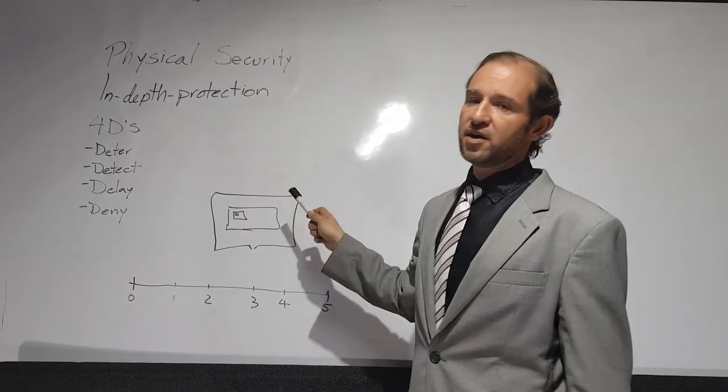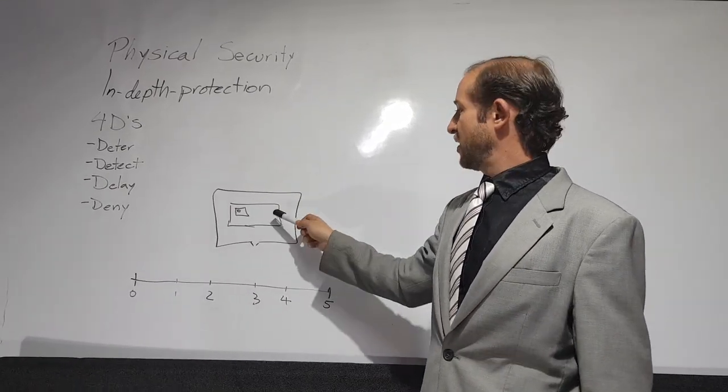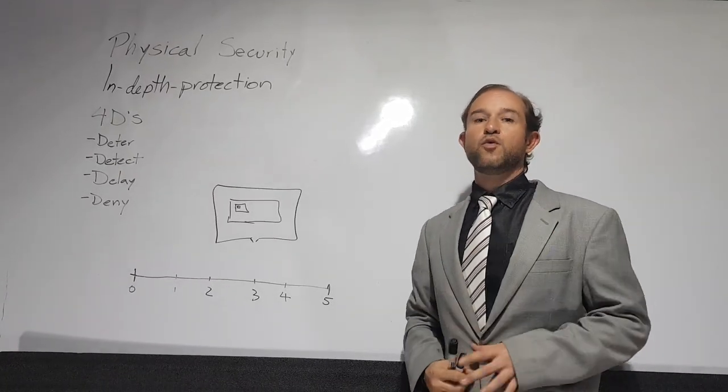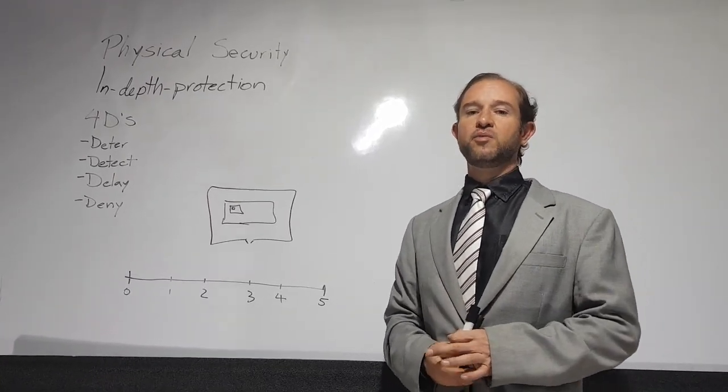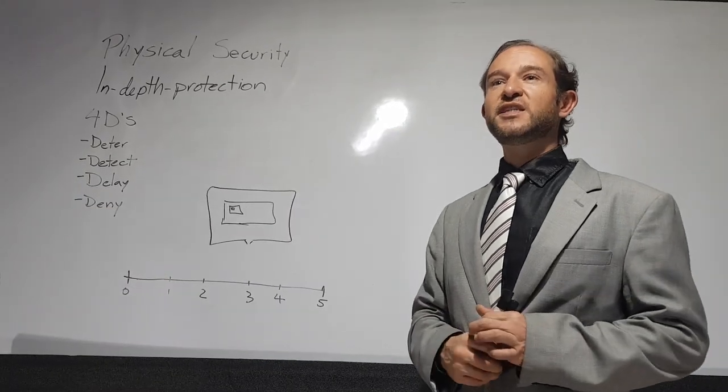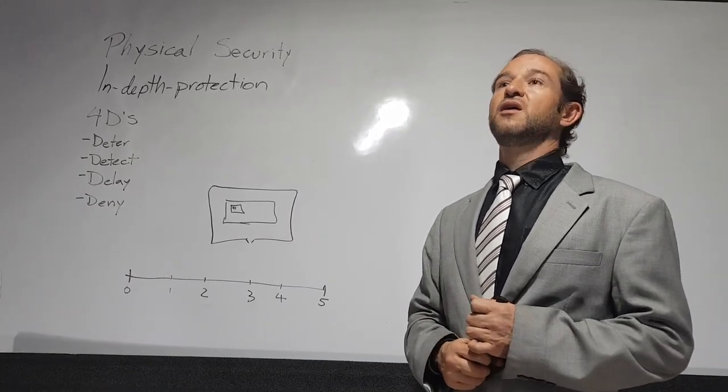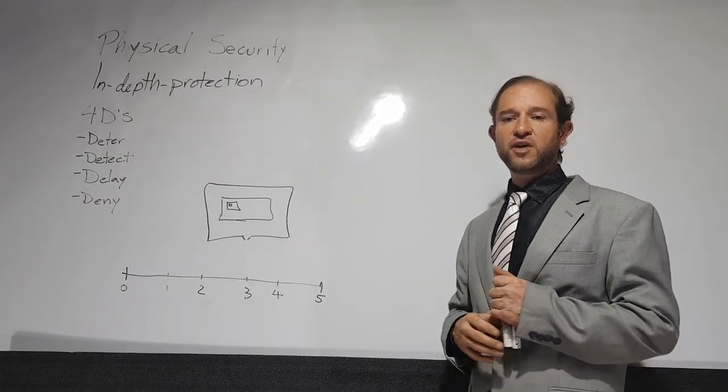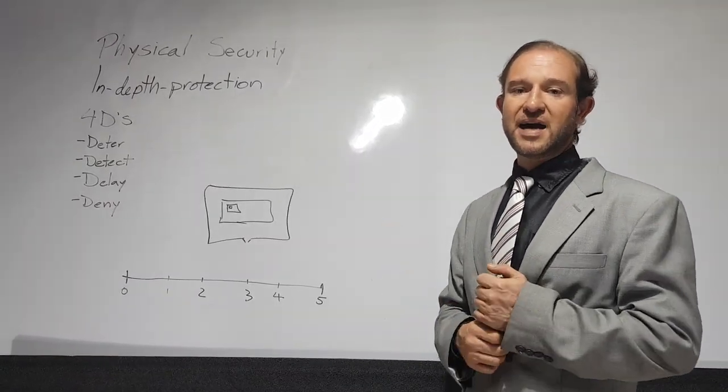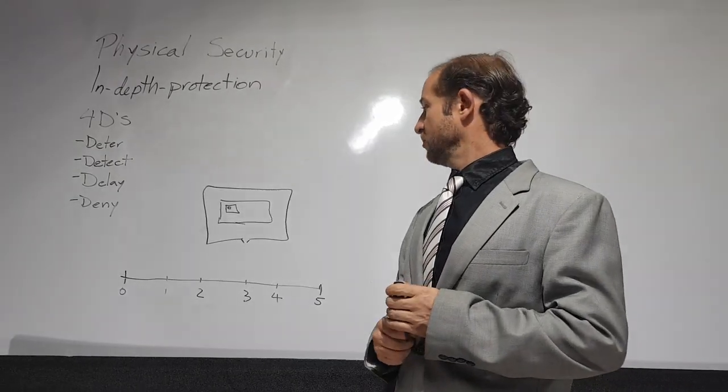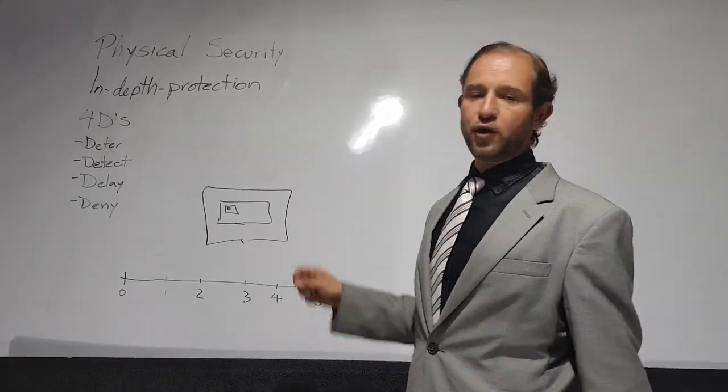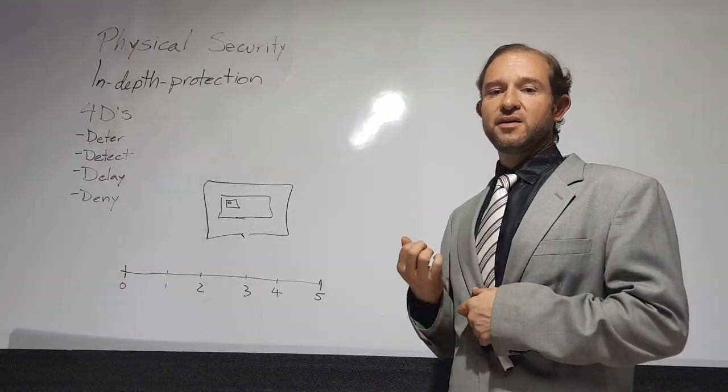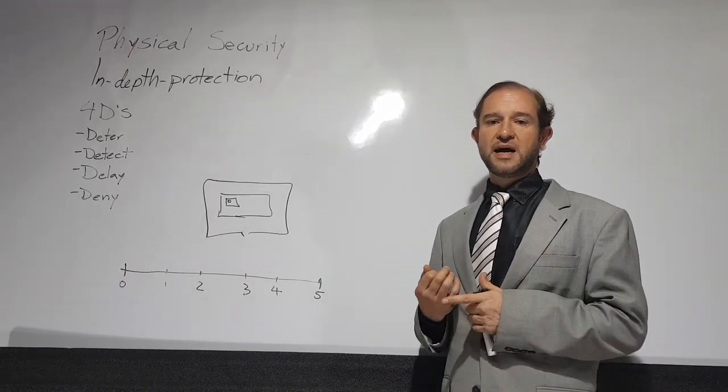And then in the building, you need to take care of the windows. Every window below 16 feet of altitude needs to have some bars or some protection against the access. And then security doors and locks, and the administration of keys is key for the access control.